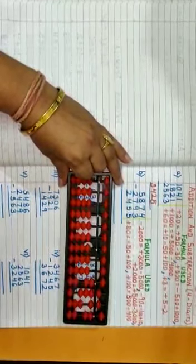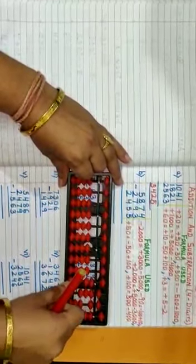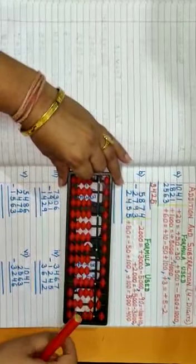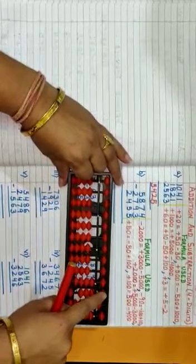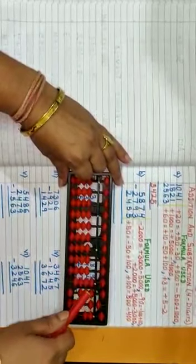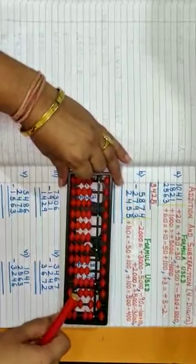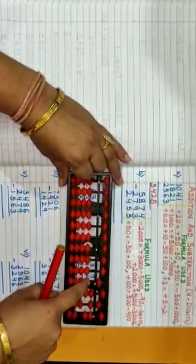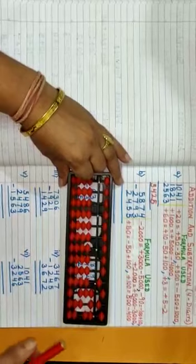Then 2563. 2000 directly. 500 is not possible, so plus 500 is equal to minus 500 plus 1000. 1000 is not possible, so plus 1000 is equal to plus 5000 minus 4000. Then 60.